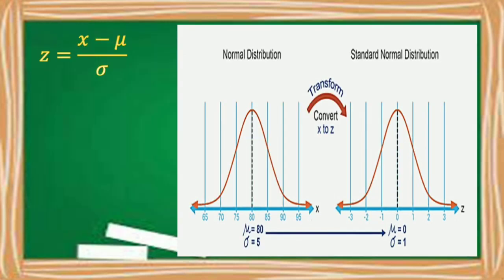To convert a normal variable x to a standard score or z-score, we are going to use the formula: z is equal to x minus μ over σ, or the z-score is equal to the normal variable x minus the mean, divided by the standard deviation.